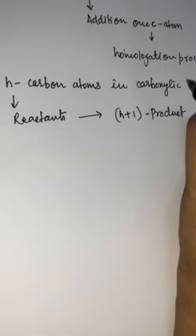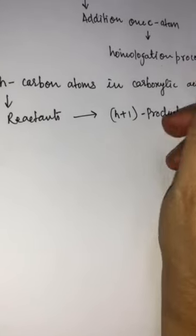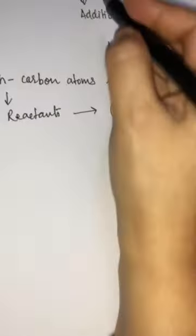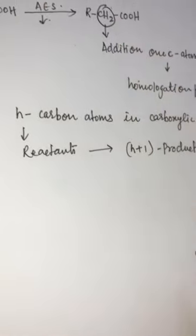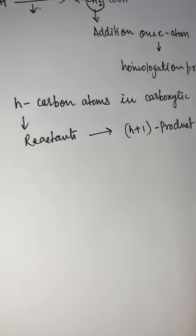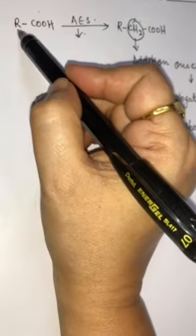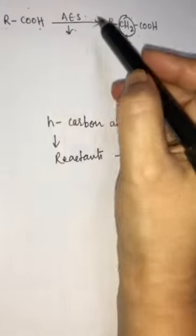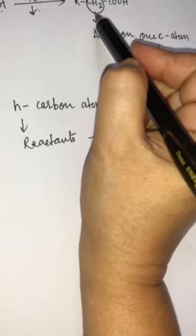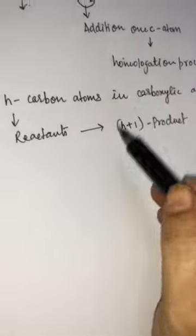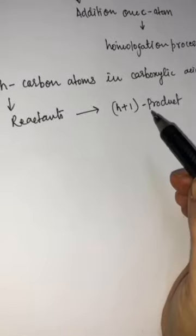The Arndt-Eistert reaction is used in the elongation of carboxylic acid — you get the formation of a carboxylic acid, but you are going to add a CH2 group, meaning one more carbon atom is added in the product. In the reactant if RCOH is there, in the Arndt-Eistert synthesis we are adding one more carbon member. This process is called the homologation process.